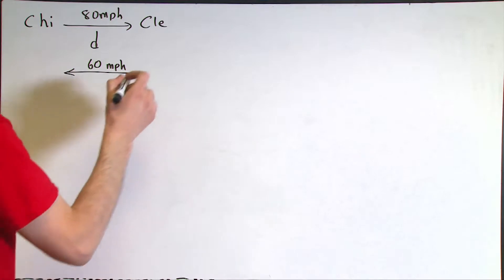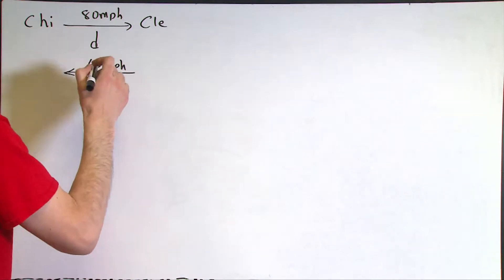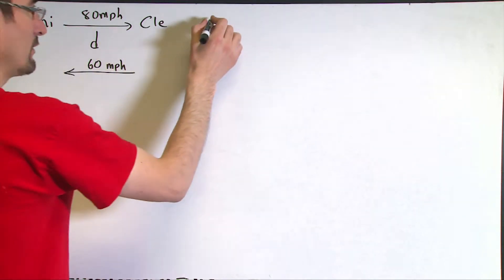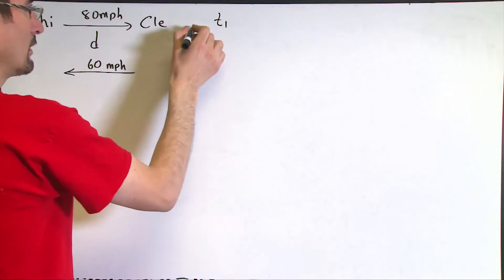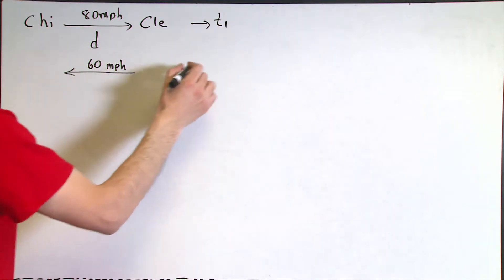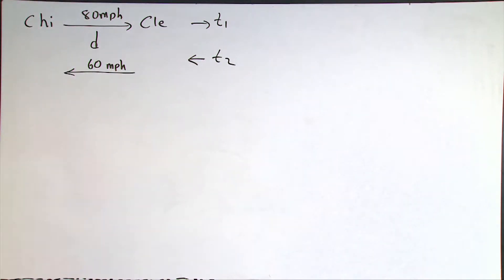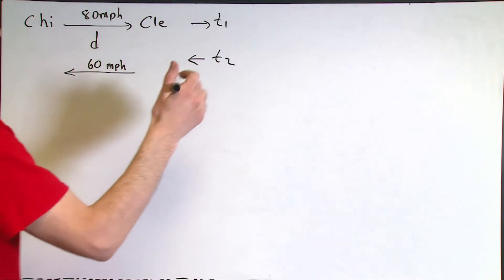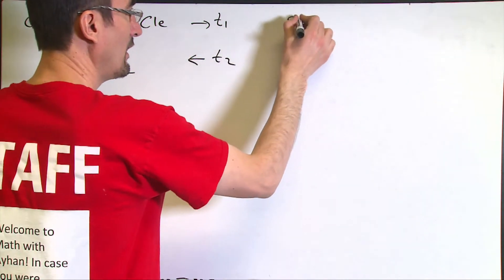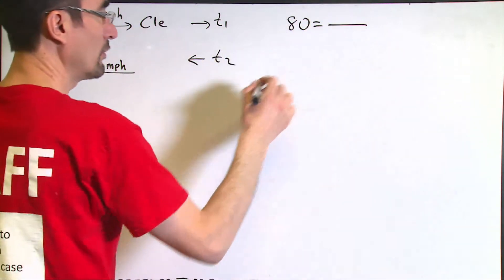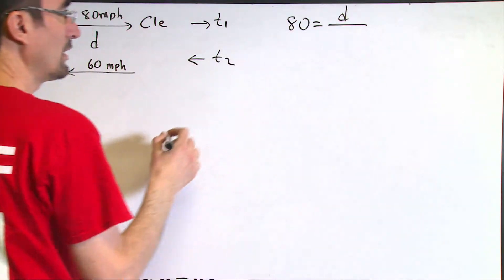Now, if we call the time elapsed the first time traveled as T1 going forward and T2 as traveling backward, T1 and T2 will be different numbers. And as we already know, speed is equal to distance divided by time. For the first case, I can set the equation as 80 miles per hour equals distance traveled divided by T1.